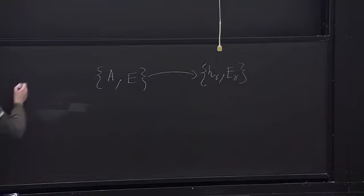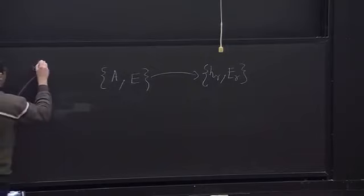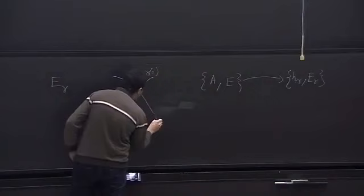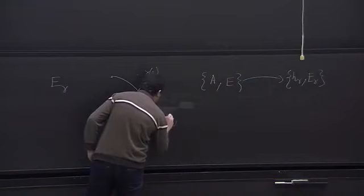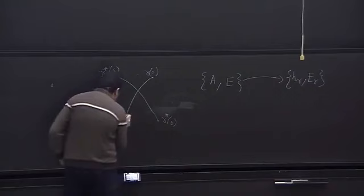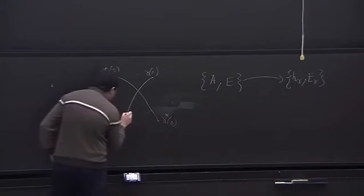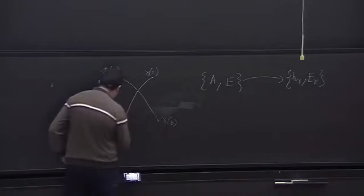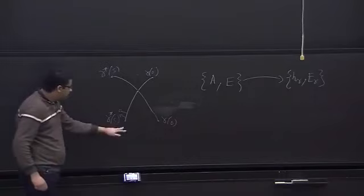And for example, if we have parallel transport along the path gamma, we should also define another dual path. So imagine if we take a vector here, and this vector we do parallel transport from here to here and back to the path gamma, started from gamma star s to gamma zero.